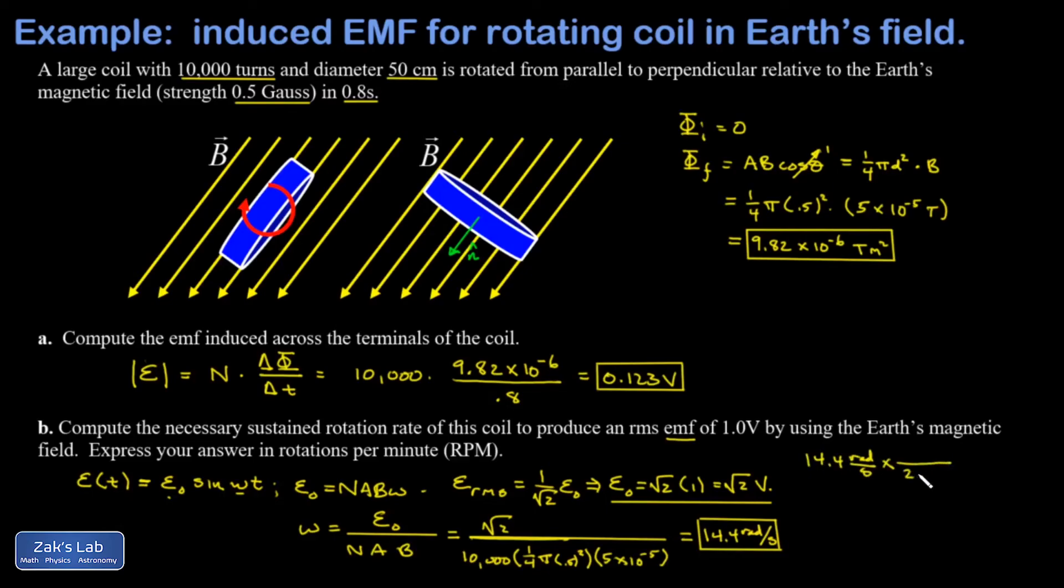I multiply by the conversion factor: 2π radians in the denominator for every one rotation, and another one, 60 seconds in the numerator for every one minute in the denominator. Cancel my radians, cancel my seconds, and when I run the numbers on this to three sig figs I get 138 rotations per minute.